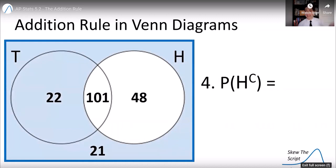Find the probability of someone who is not a high-income earner. We add everything outside the high-income earner circle, so that's 22 plus 21 out of 192 is 22.4%. We'll also use the complement rule, one minus the probability of high-income earning. So that's one minus what we got before, which again gives us 22.4%.